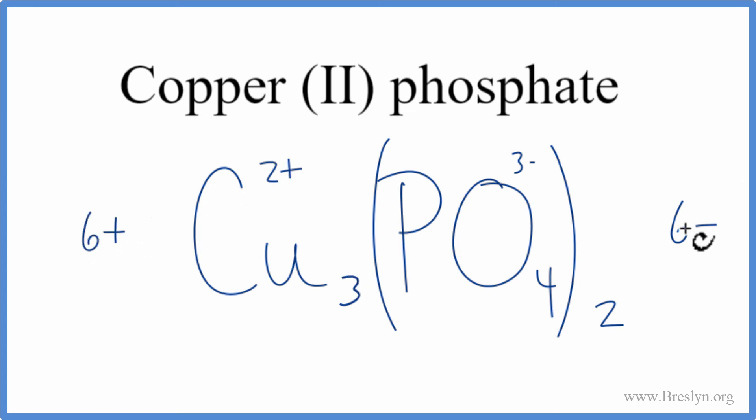So 6-plus and 6-minus, that adds up to zero, it gives us a net charge of zero. This is the correct formula for copper 2-phosphate. Let's clean it up. And that's it. Copper 2-phosphate, Cu3(PO4)2.